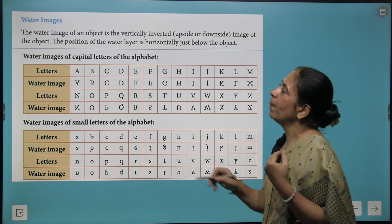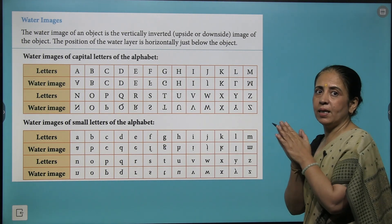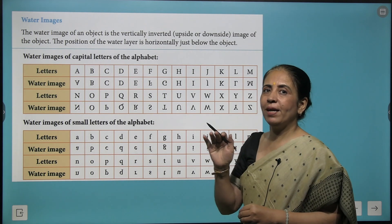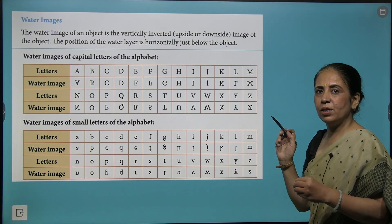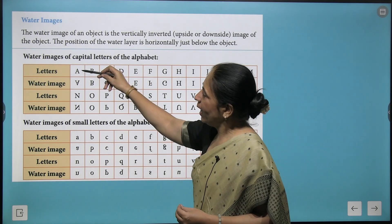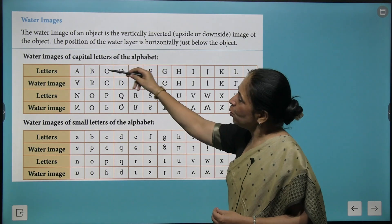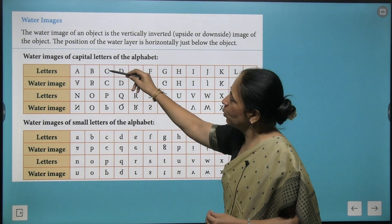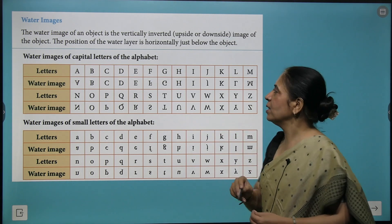And these are the mirror images of numbers from 0 to 9. Now we talk about water images. So when we say water image, it immediately tells you that your image is vertically inverted here. That means upside down and downside up. So this is how your A is written and its water image comes like this. But most of the alphabets you could see they are having exact same water images.